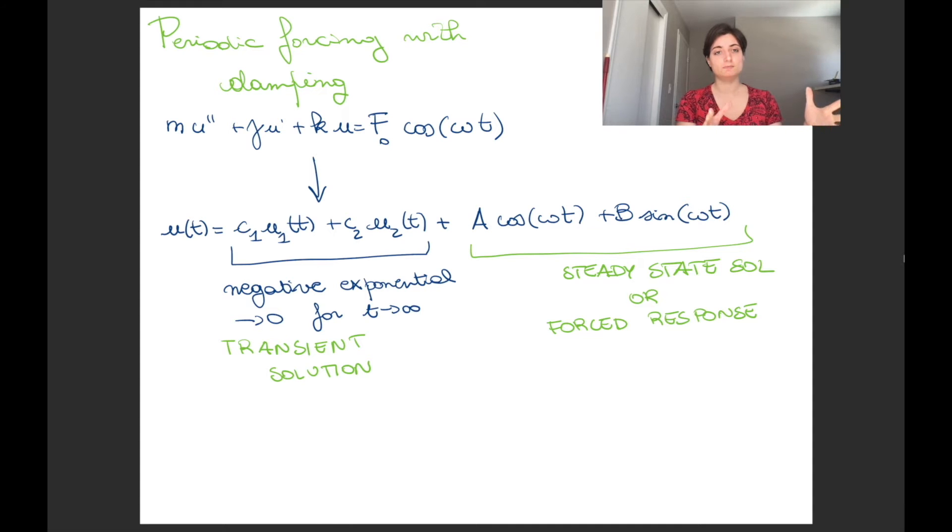The first block comes from a dampened spring, so we already know it has a negative exponential. Because of the negative exponential, it tends to 0 for t tending to infinity. So that block is always the transient solution.